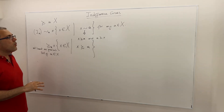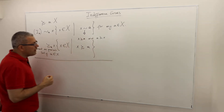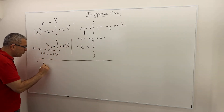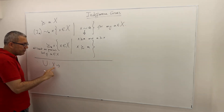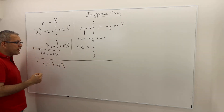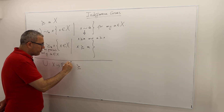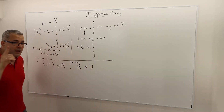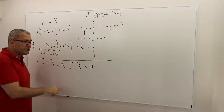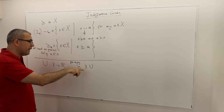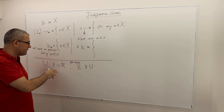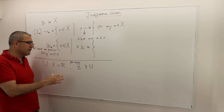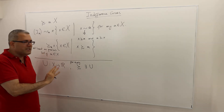In many environments — for example in consumer theory — we talk about a utility function rather than preferences directly. A utility function maps X, the set of alternatives, to real numbers. For every preference relation with nice properties, there exists a utility function representing it. If X is finite we don't need continuity, but if X is infinite then we need the preferences to be continuous.